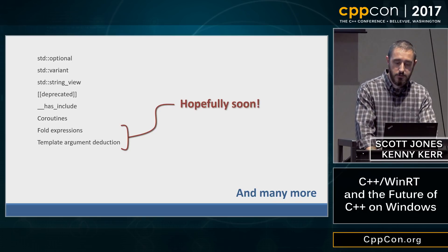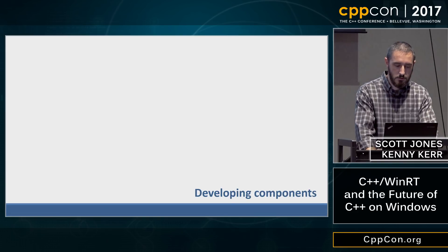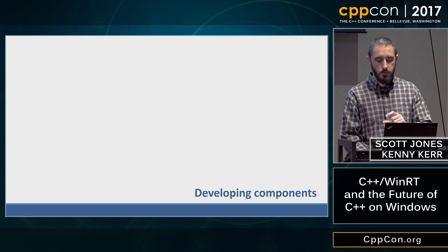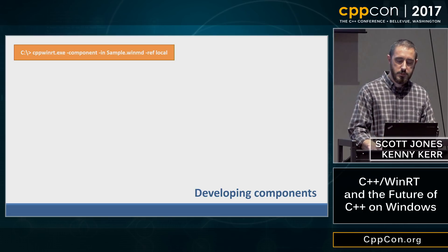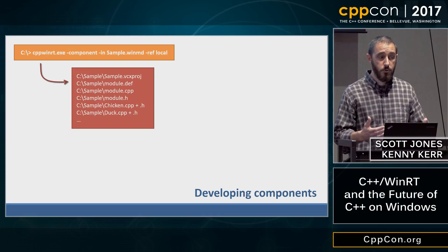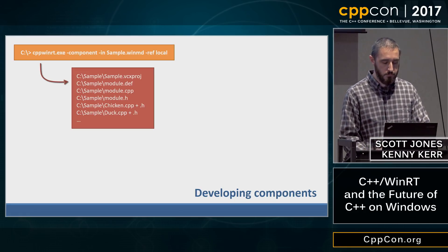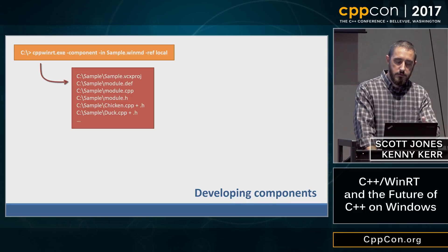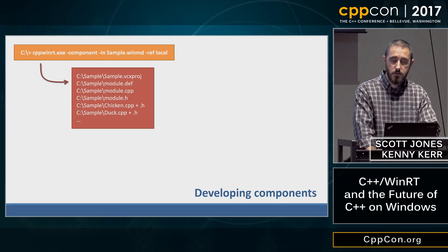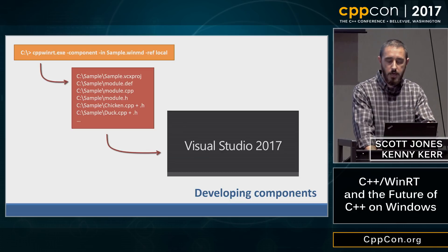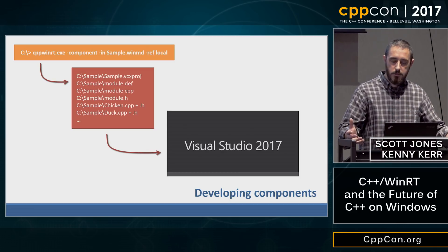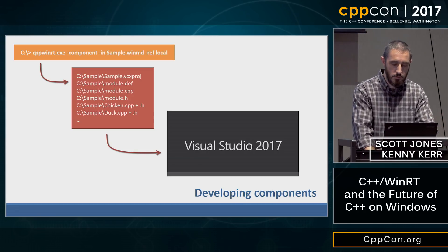A lot of you have asked about developing components, so we'll talk about that now. Developing components is largely the same in terms of how our tooling works. You call the same cppwinrt executable with a dash-component option, which lights up the component authoring experience. It produces a superset of the projection you'd get consuming those types — including a Visual C++ project, a module.def file, and the scaffolding needed to author your own types. We also support round-tripping: when you update your metadata, we update the scaffolding automatically.